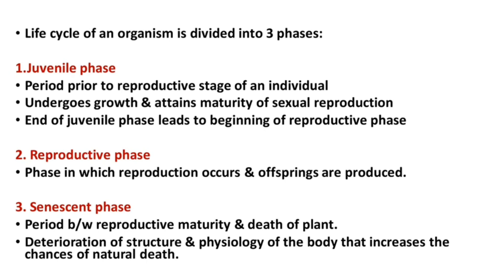The juvenile phase is mainly growth and attaining maturity. The reproductive phase involves reproduction. The third phase, the senescence phase, spans from reproductive maturity to the death of the plant, involving deterioration of structure and physiology.